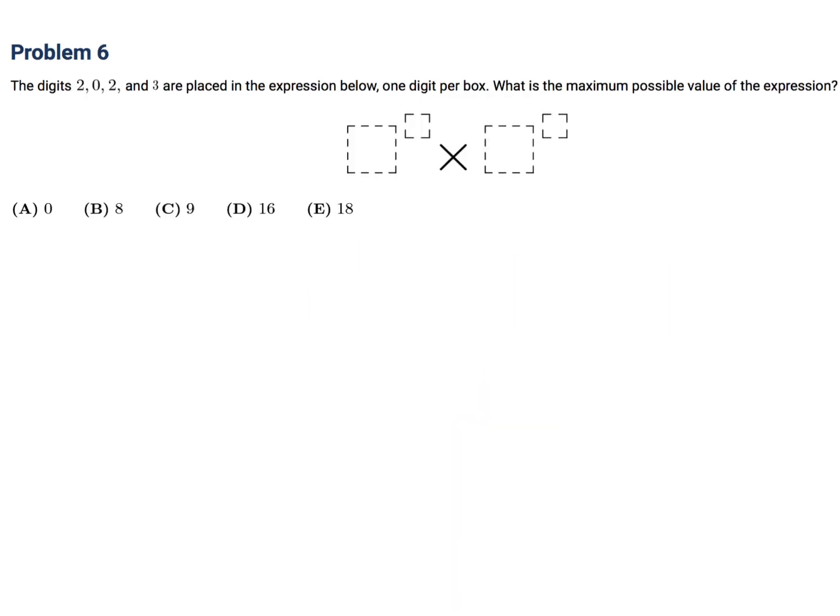The digits 2, 0, 2, 3 are placed in the expression below one digit per box. What is the maximum possible value of this expression? All right, so you just got to fiddle around, you know. So when I fiddled around, first thing I did was, let's see, I got 2 to the power of 0 times 2 to the power of 3. What does that give me? This will be 1 times 8, which is 8. Okay. Let's see if I can get anything bigger than that. I probably can. Then I tried 3 to the power of 2 times 2 to the power of 0. That's 9 times 1. Well, there you go. I got 9. And you'll notice that this is the biggest. You can't get anything bigger than that, no matter how you arrange those four into these boxes.